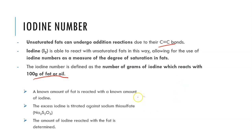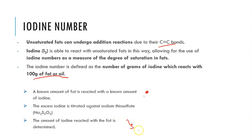What we need to know is a known amount of the fat being reacted with a known amount of iodine. The excess iodine is then titrated against sodium thiosulfate and the amount of iodine reacted with the fat is determined. Sometimes questions will give you the amount of iodine that has reacted, and sometimes they might provide this in a volumetric analysis situation.